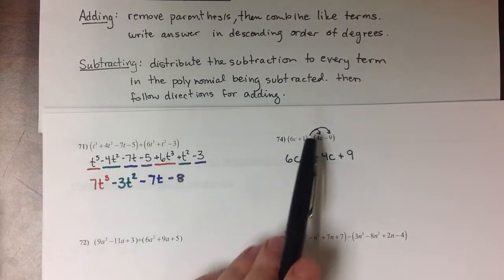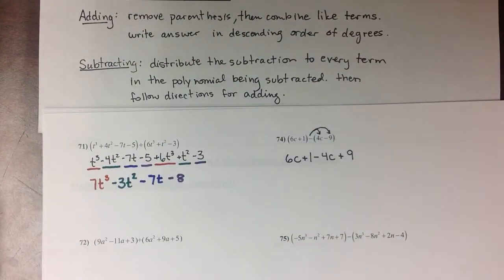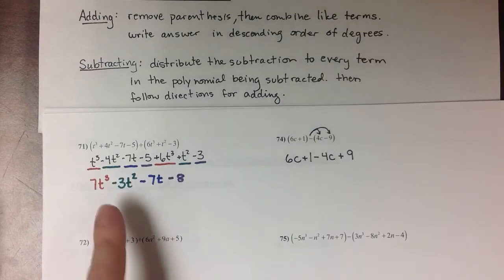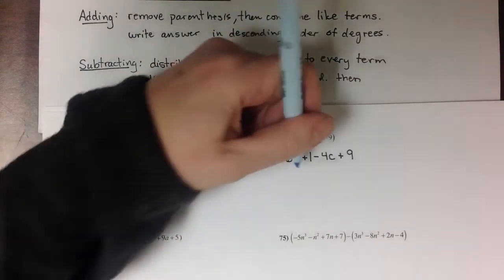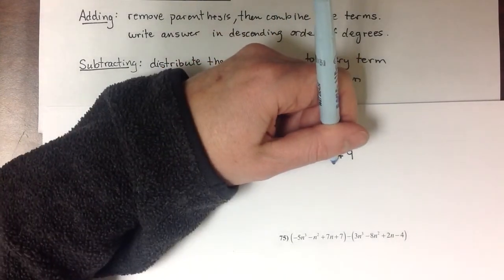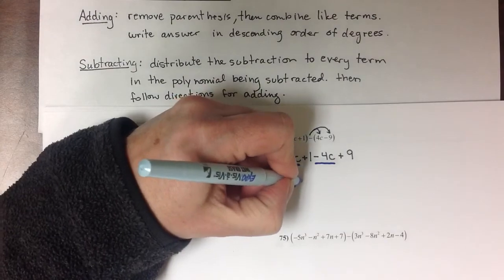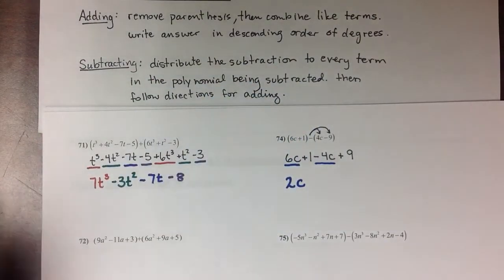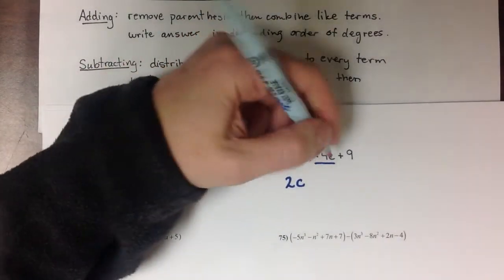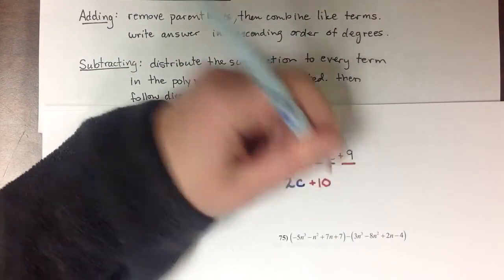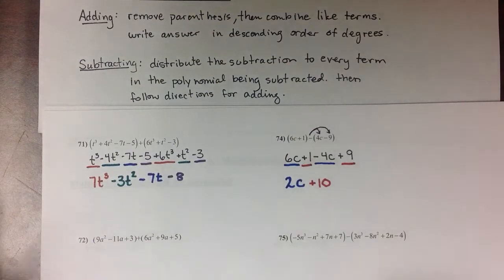Now that the parentheses are gone and the subtraction is distributed, we're going to collect like terms, just like we did in number 71. So it looks like I've got 6c's here and a -4c's there. That'll give me a total of 2c's. And then a positive 1 and a positive 9 gives me a total of positive 10.